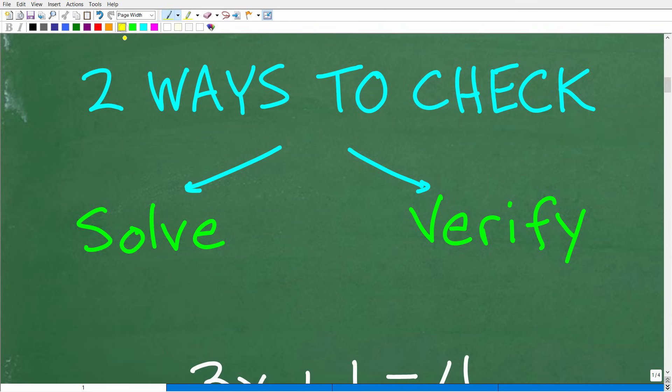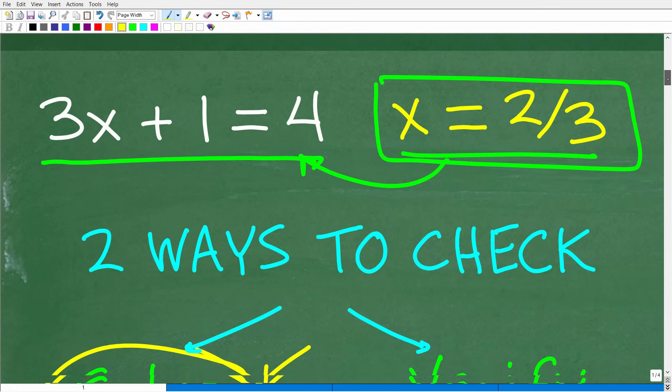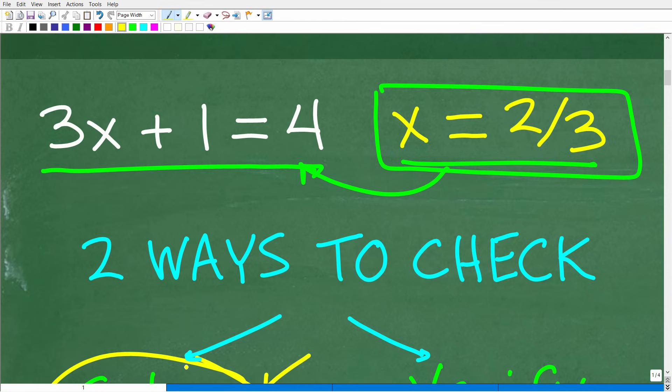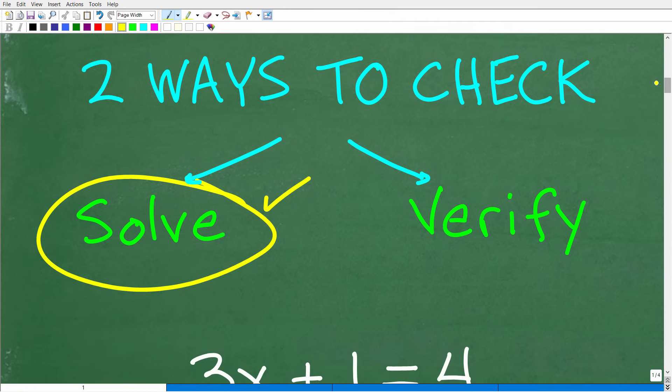Now, the first way is hopefully kind of obvious. First of all, we need to solve that equation. And if we solved it perfectly correct, we can look at the answer and just compare it to this answer and be like, all right, is this the answer from my solution the same as this? Now, of course, you have to have high confidence in your work, but that is one technique.